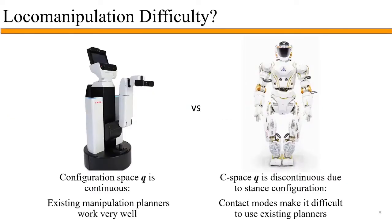So what makes local manipulation difficult? For real robots, the configuration space is continuous, so existing manipulation planners work well. But for legged robots, the configuration space is discontinuous due to different possible stance or contact configurations, making it difficult to use existing planners.